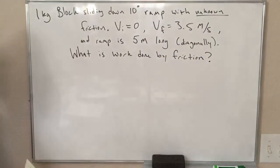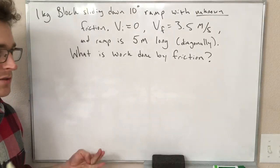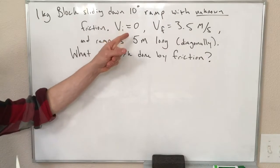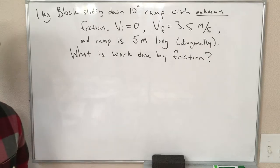Here's the problem. We have a 1 kilogram block sliding down a 10 degree ramp that has unknown friction. Maybe the friction is 0, maybe the friction is something else, we don't know. The initial velocity of the block is 0. The final velocity of the block is 3.5 meters per second, and our ramp is 5 meters long in the diagonal direction. So what is the work done by friction in this case?